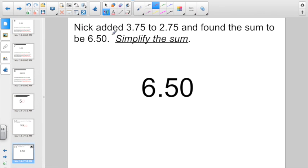Here we have one that says, Nick added 3.75 to 2.75 and found the sum to be 6.50. Now, we have to go and simplify the sum. From here on out, any decimal answer you write down, if the decimal can be simplified, it must be simplified. What's the rule? Take off the zero at the end of any decimal number. Instead of 6 and 50 hundredths, 6 and 5 tenths is that decimal written in its lowest terms.